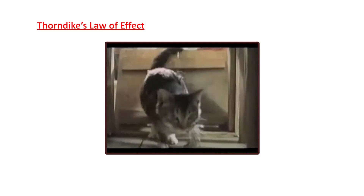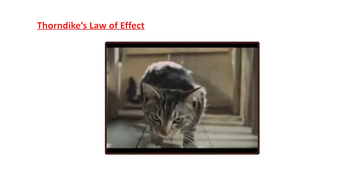Operant conditioning is an expansion of Thorndike's Law of Effect. American psychologist Edward Lee Thorndike used a puzzle box to study how cats learn. A hungry cat was placed inside the box with a piece of fish placed outside the box, so that to get the fish and satisfy its hunger the cat needed to escape from the puzzle box.